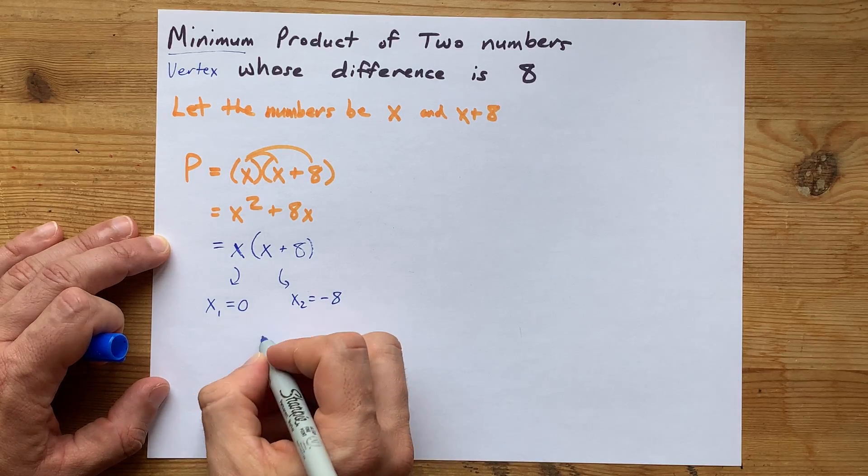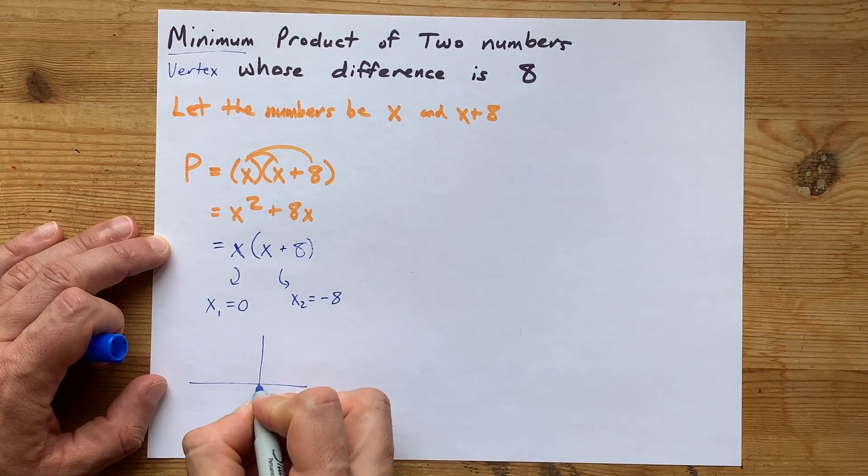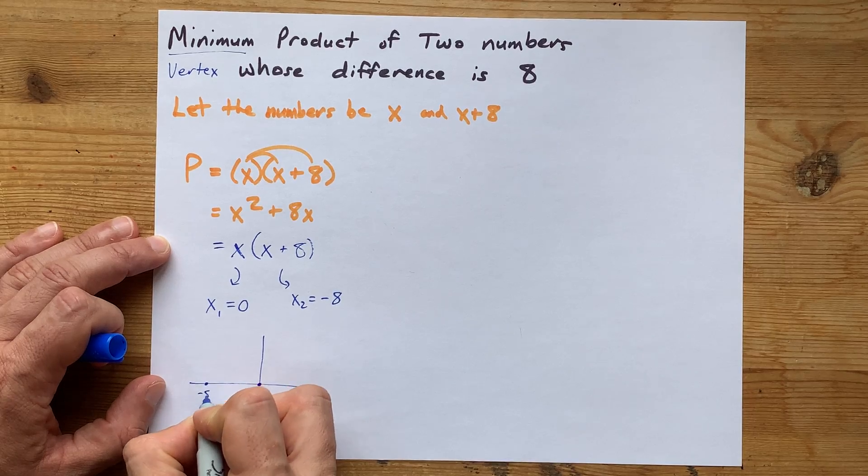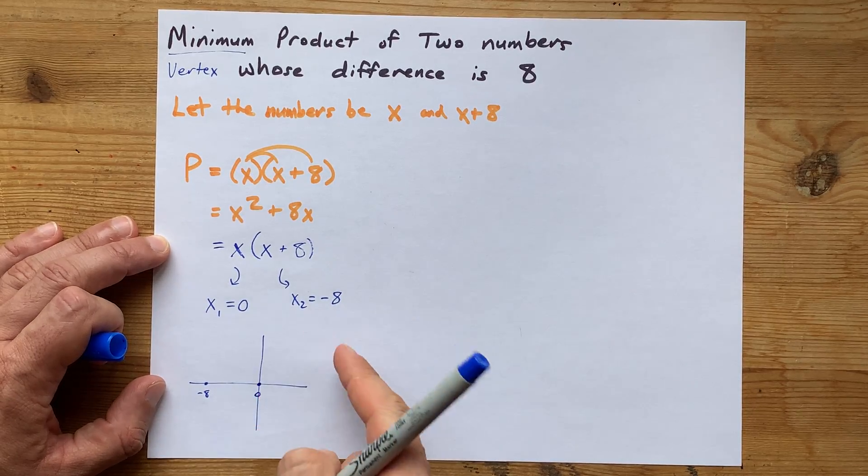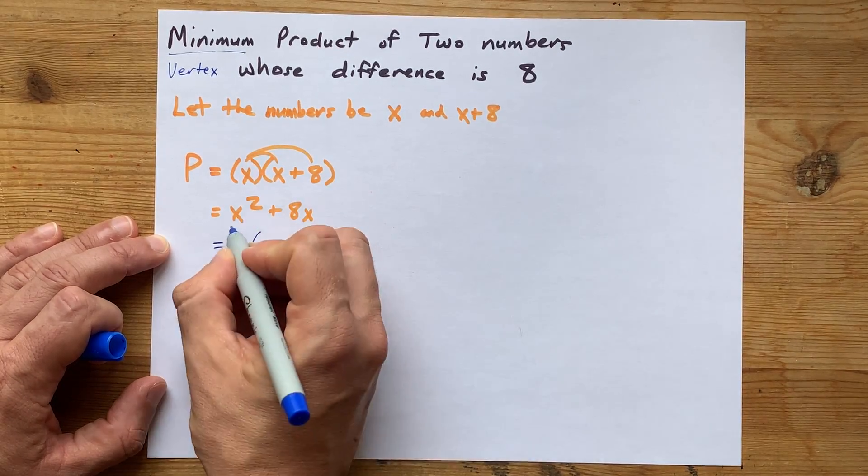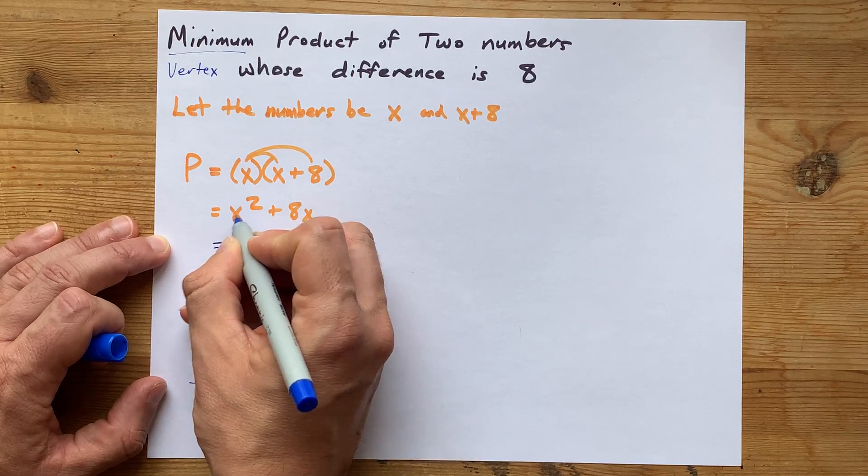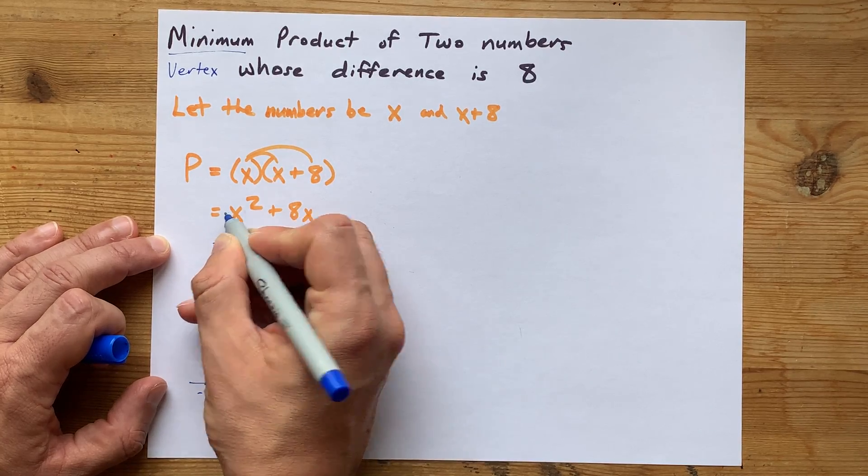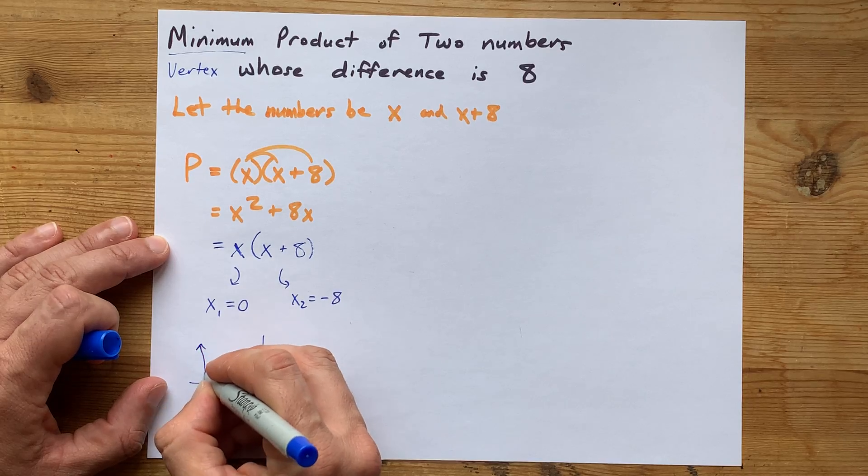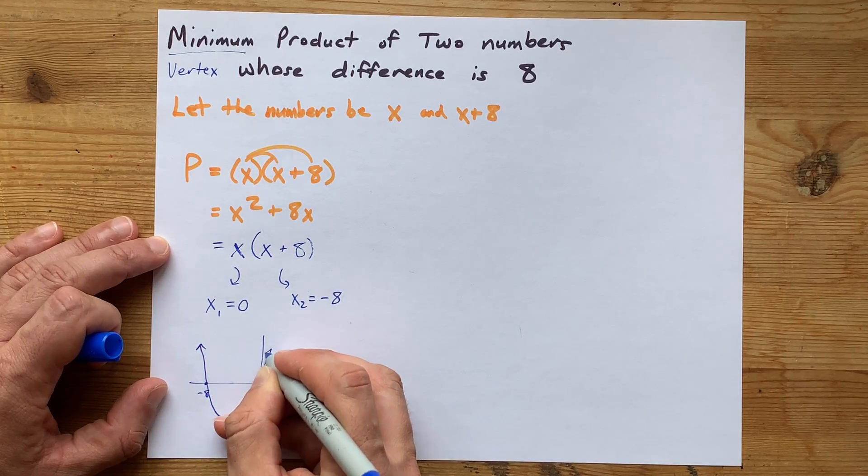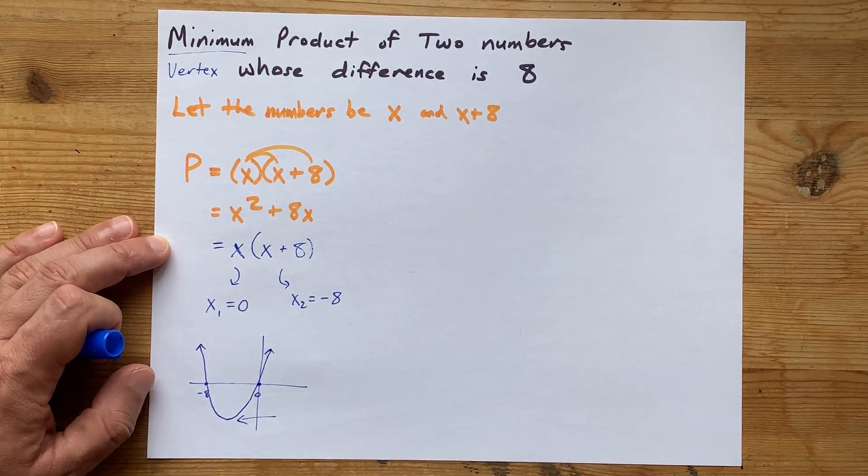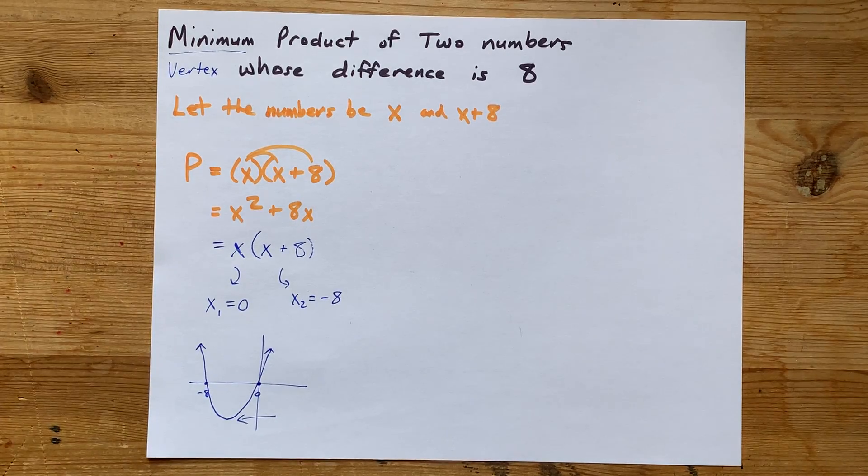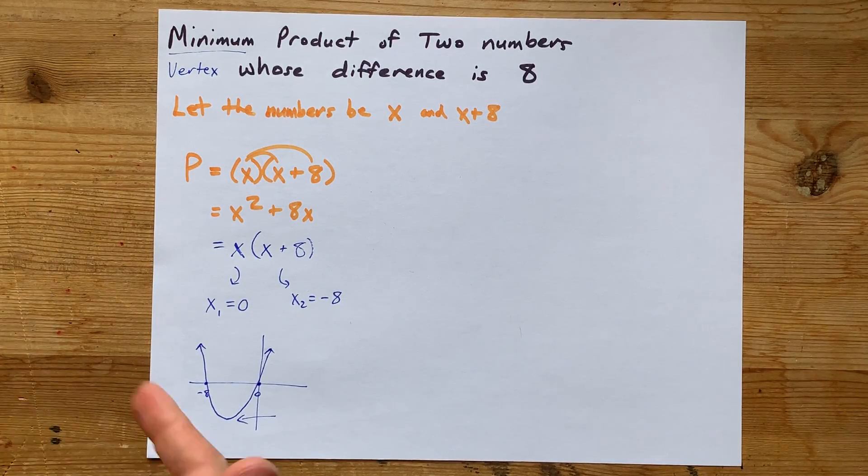Now, what that means is that this parabola has an x-intercept here at 0, and another one here at negative 8. It opens upward, because the coefficient on my x squared is positive. See, there's no negative out front there, which means the parabola looks something like this. And yet, we do indeed have a minimum. The question is, where does that minimum occur?